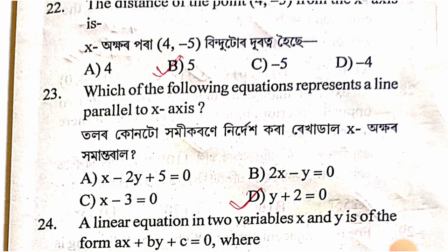For the equation y + 2 = 0, the solution is y = −2.